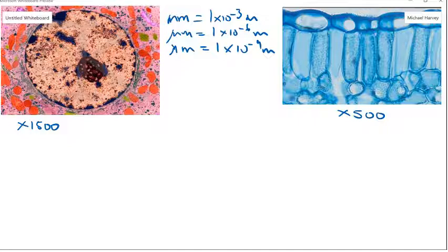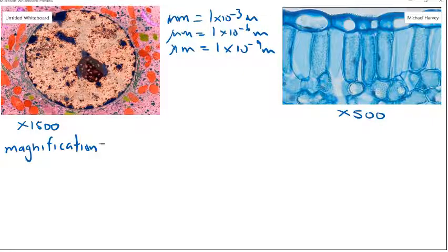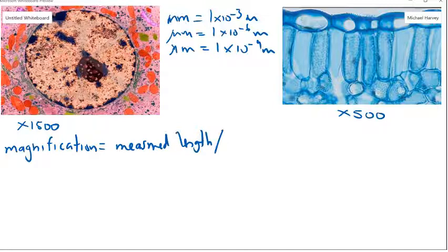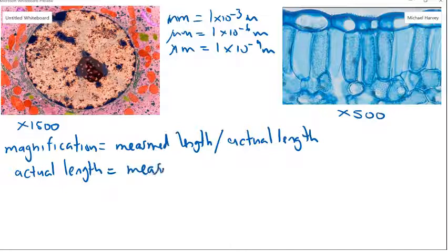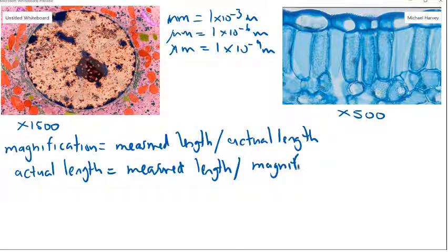There are two equations we can use to determine the actual true size of an organism using its actual measurement and known magnification. The first equation is the magnification equation: magnification equals measured length divided by actual length. If we rearrange that equation, actual length equals measured length divided by magnification. Those are two very handy equations.